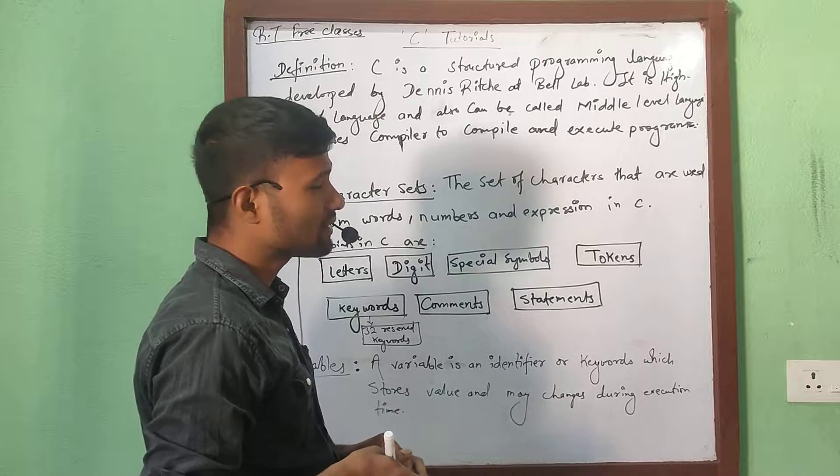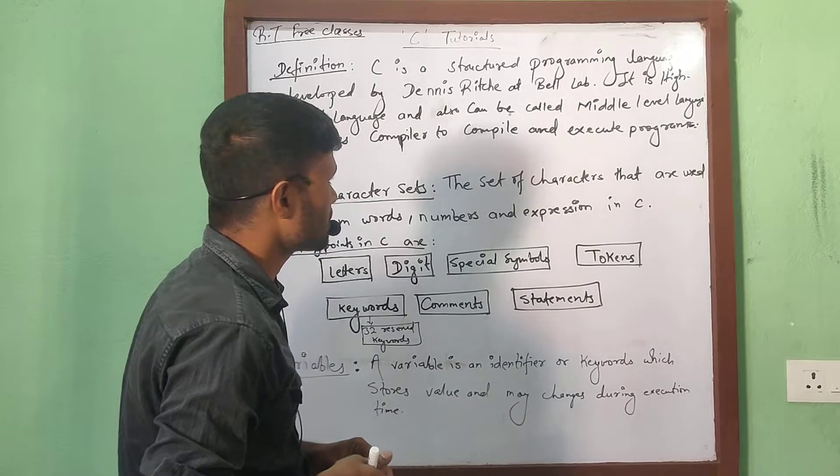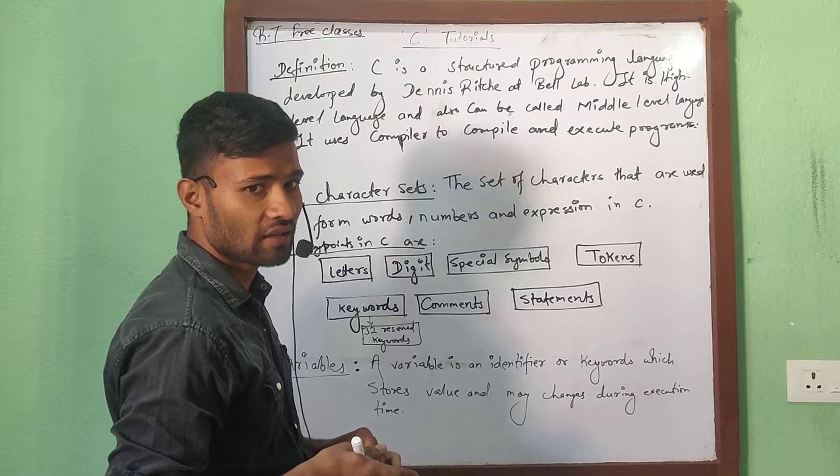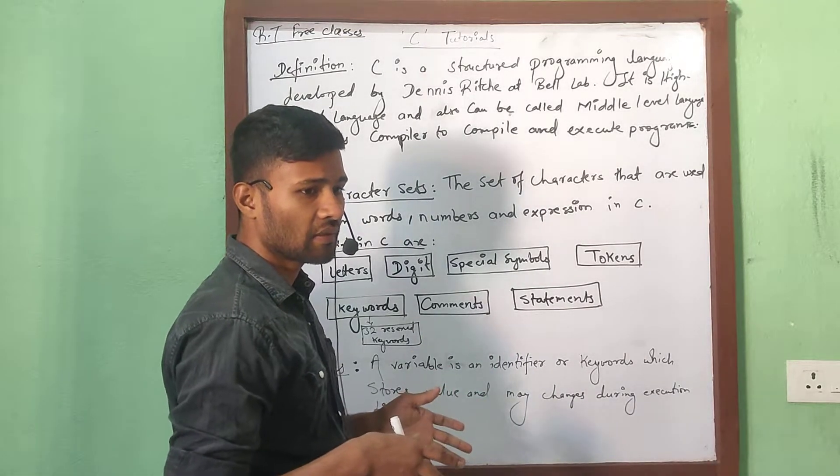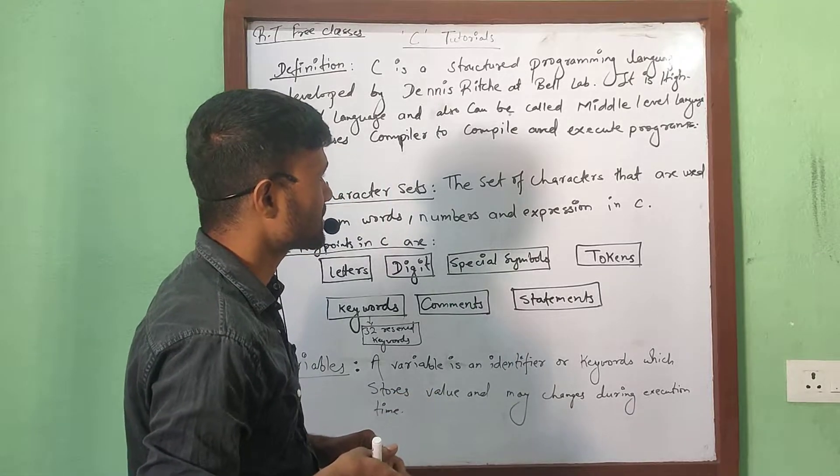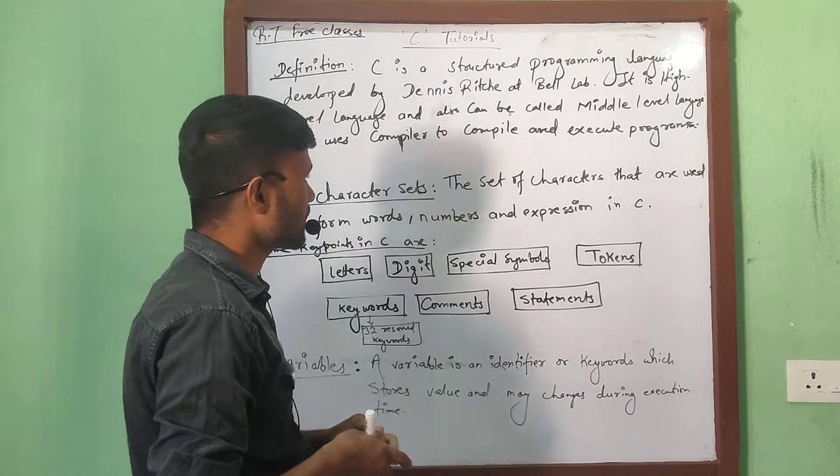It uses a compiler to compile and execute the programs. C programming uses compiler. As previously QB6 programming language was using the interpreter, C programming language uses the compiler. Let's come to another point.